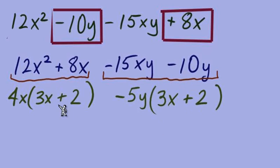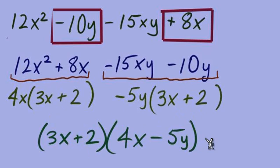And now we see that we do have these quantities in parentheses matching. So that will be one factor in our answer and the other factor will be made up of these two, 4x minus 5y.